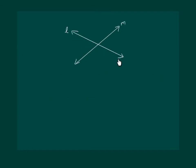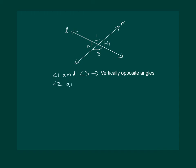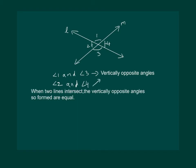Look at two intersecting lines, line L and M. Four different angles are formed: 1, 2, 3, and 4. Angle 1 and angle 3 are called vertically opposite angles. Similarly, angle 2 and angle 4 are also vertically opposite angles. These vertically opposite angles are equal. Hence, when two lines intersect, the vertically opposite angles so formed are equal — angle 1 equals angle 3, and angle 2 equals angle 4.